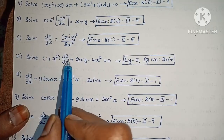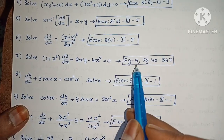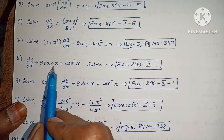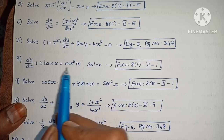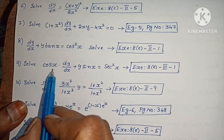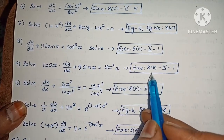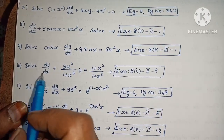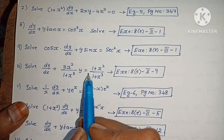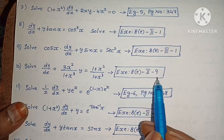Next, solve (1 plus x²)·(dy/dx) plus 2xy minus 4x² equals 0. Example 5, page number 347. Next, solve dy/dx plus y·tan(x) equals cos³(x). Next, solve cos(x)·(dy/dx) plus y·sin(x) equals sec²(x). Next, solve dy/dx plus (3x²/(1+x³))·y equals (1+x²)/(1+x³).